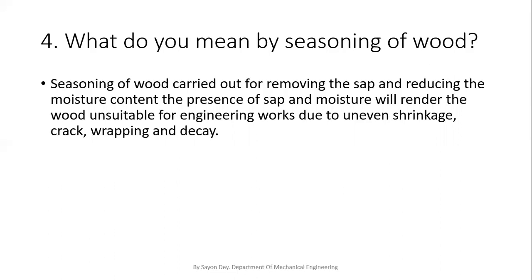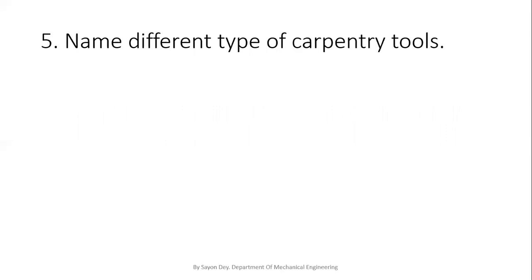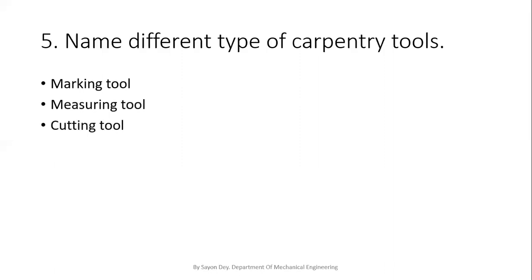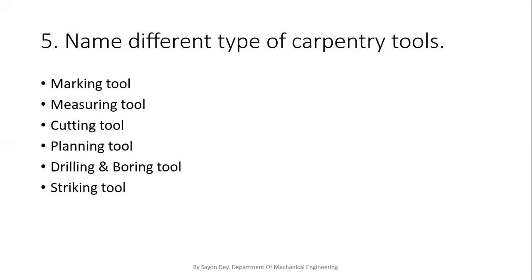The next question is: name the different types of carpentry tools. In our pattern or carpentry shop, we work on wood using various hand tools. The most important tools are: marking tools for marking on wood, measuring tools for measuring, cutting tools for cutting wood, planing tools used for smoothing, drilling or boring tools used to make and enlarge holes, striking tools to strike our handles, and holding tools used to hold the workpiece between the jaws of holding devices.